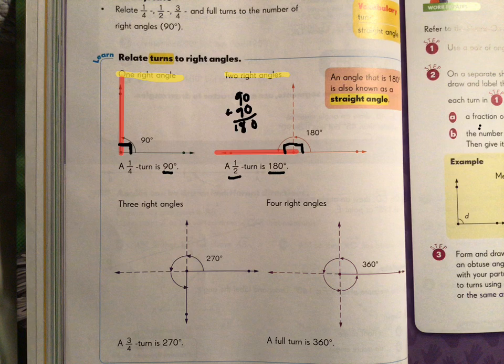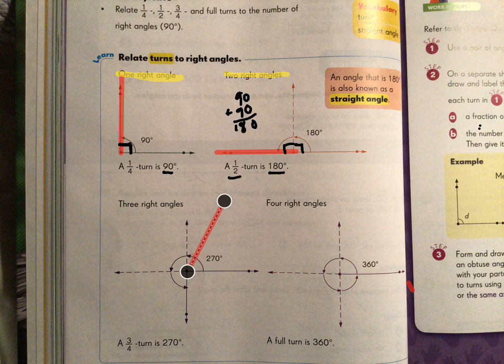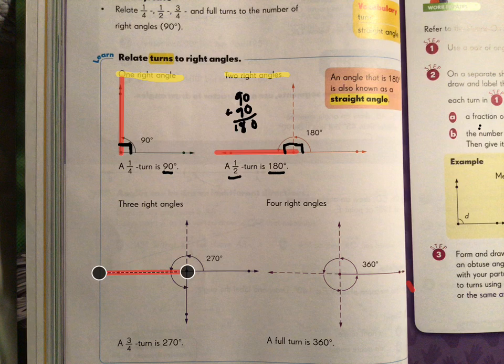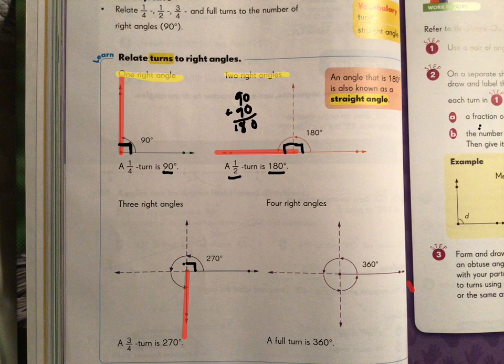Let's come down here and look at three right angles. So if we look down here, we would rotate. Here's one right angle, two right angles, three right angles. Here's one right angle, the second right angle, the third right angle.